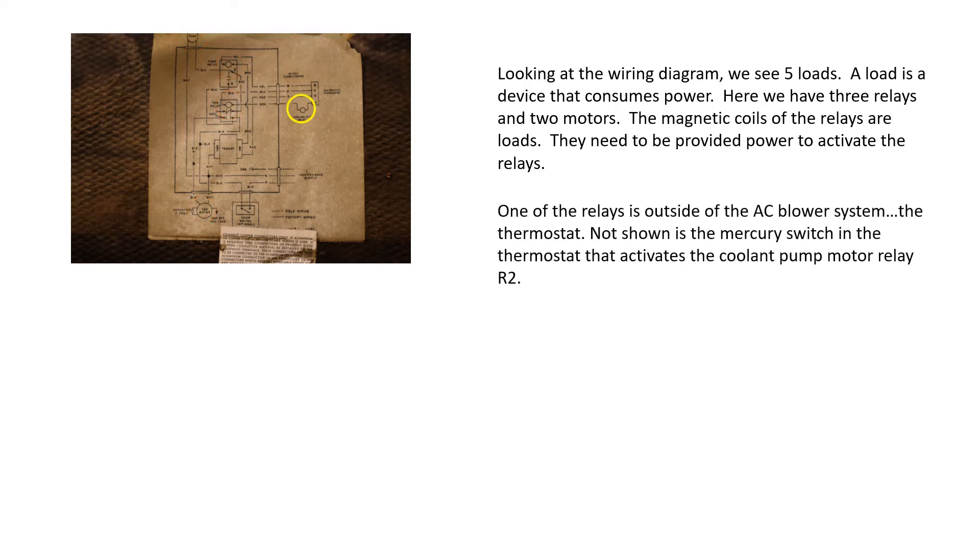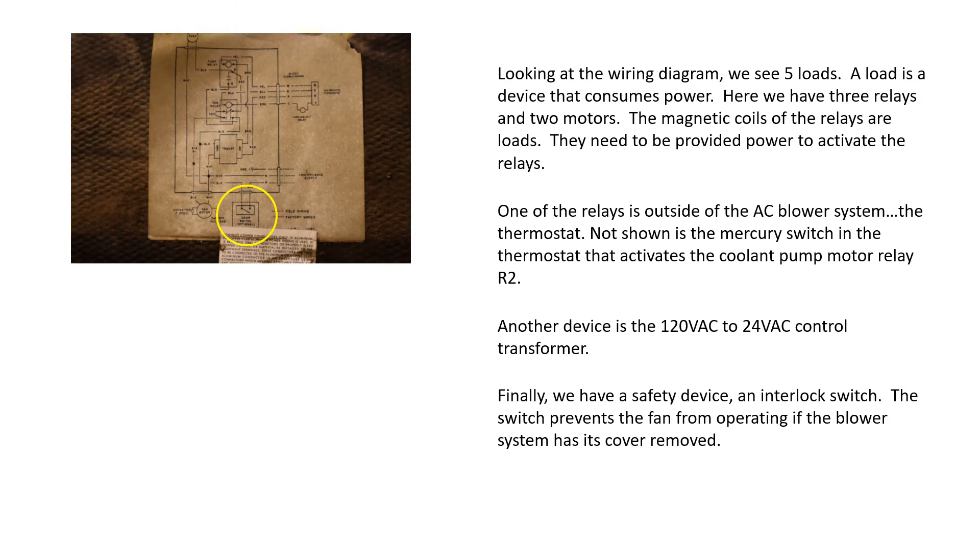One of the relays is outside of the AC blower system, the thermostat. Not shown is the mercury switch in the thermostat that activates the coolant pump motor relay R2. Another device is the 120 volt to 24 volt control transformer. Finally, we have a safety device, an interlock switch. The switch prevents the fan from operating if the blower system has its cover removed.